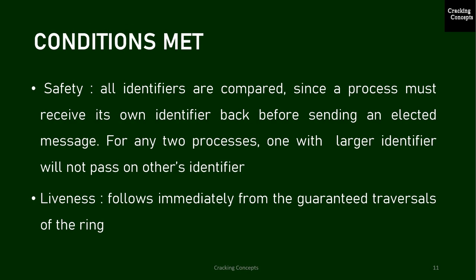Now we check whether the two requirements for an election algorithm are met. Safety is met here: all identifiers are compared since a process must receive its own identifier back before sending an elected message. For any two processes, the one with the larger identifier will not pass on the other's identifier, so it is impossible that both should receive their own identifier back. The second property, liveness, follows immediately from the guaranteed traversals of the ring — we have already assumed there are no failures in this case.